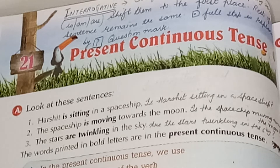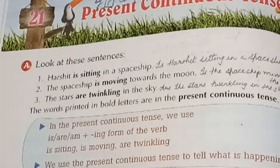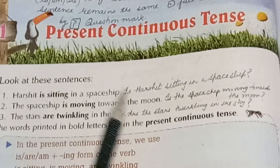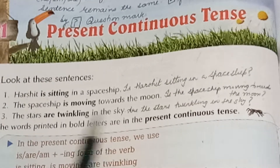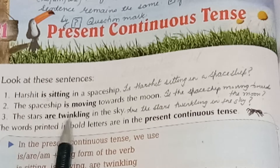You can see the sentences here: 'Harshit is sitting in a spaceship.' Children, I request you to take your pencils along because we will be doing a little more work apart from the exercises. The second sentence is: 'The spaceship is moving towards the moon.' You can see we are using 'is sitting', 'is moving'. The third sentence: 'The stars are twinkling in the sky.' These are present continuous tense examples.